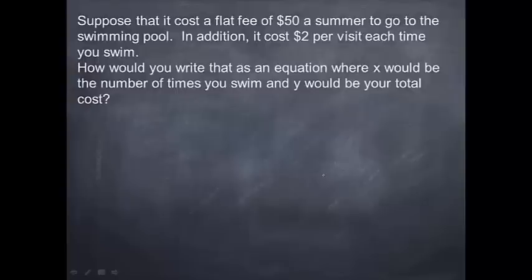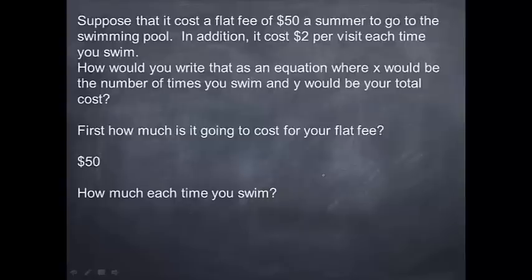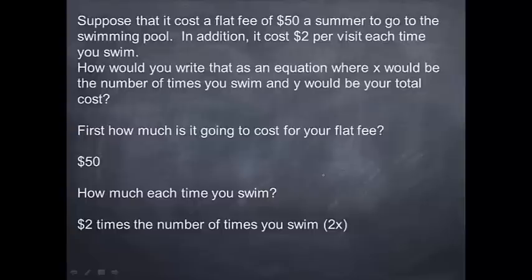What is this question asking you? We're looking for how we're going to write an equation where x is the number of times you swim and y is your total cost. We're setting up an equation, and we want to know first how much the flat fee costs. Going back to the problem, the flat fee is $50. How much does it cost per visit each time you swim? It's $2 times the number of times you swim. So x is the number of times you swim, and since it's $2 per visit, that gives us 2x.